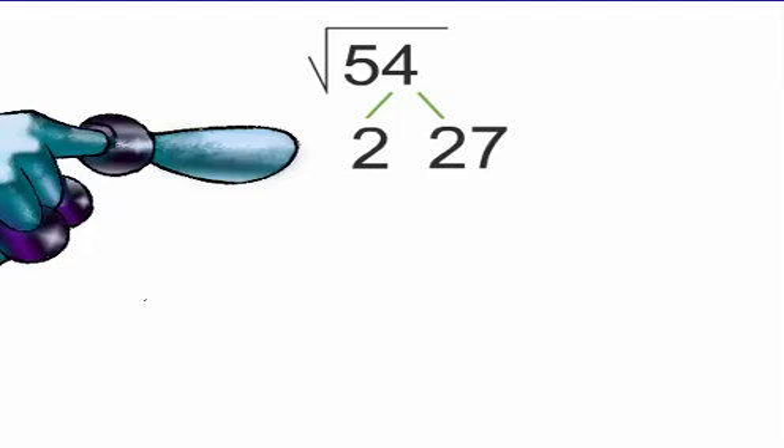Here we are asked to find the square root of 54. So let's start a factor tree. Does 2 divide into 54? Yes it does. 54 divided by 2 is 27. So our factors of 54 are 2 and 27.